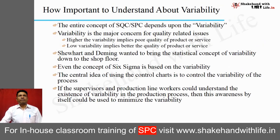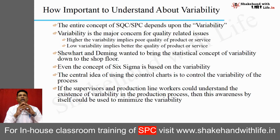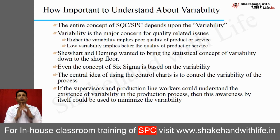The entire concept of SQC and SPC depends upon variability. Variability is the major concern for quality-related issues. Higher variability implies poor quality of product or service; low variability implies better quality. Shewhart and Dr. Deming wanted to bring the statistical concept of variability down to the shop floor. Even the concept of Six Sigma is based on variability — in a Six Sigma project, the major concern is the reduction of variability. The central idea of using a control chart is to control the variability of the process.